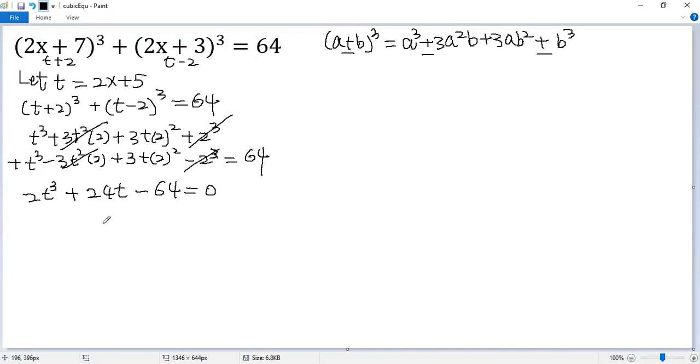Both sides divided by 2, so we get t³ + 12t - 32 = 0.